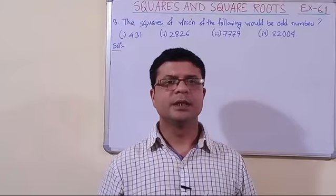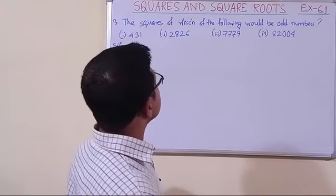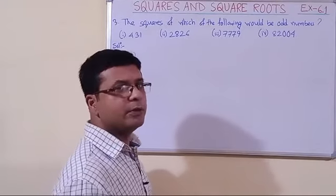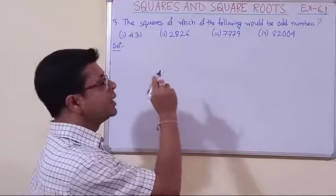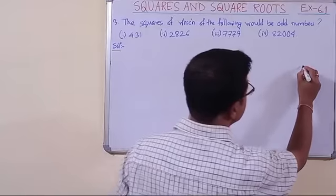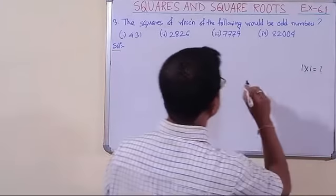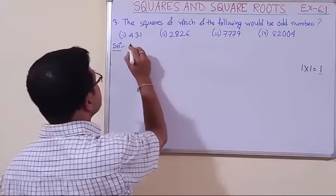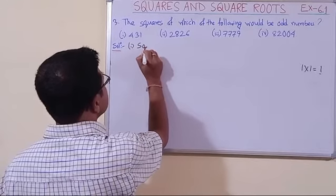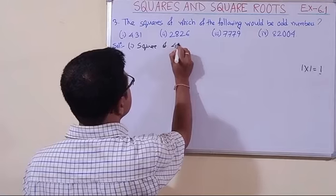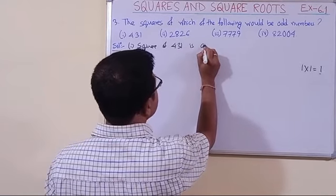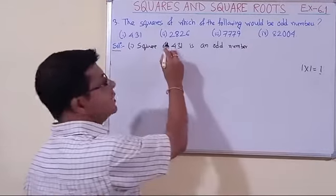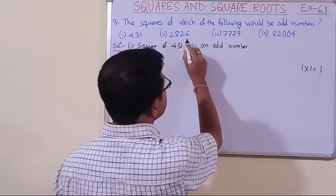Dear students, we have taken question number three. The question asks: the squares of which of the following would be odd numbers? The first number is 431. To find the unit digit in the square of this, we multiply 1 into 1, which gives 1. Since 1 is an odd number, the square of 431 is an odd number.